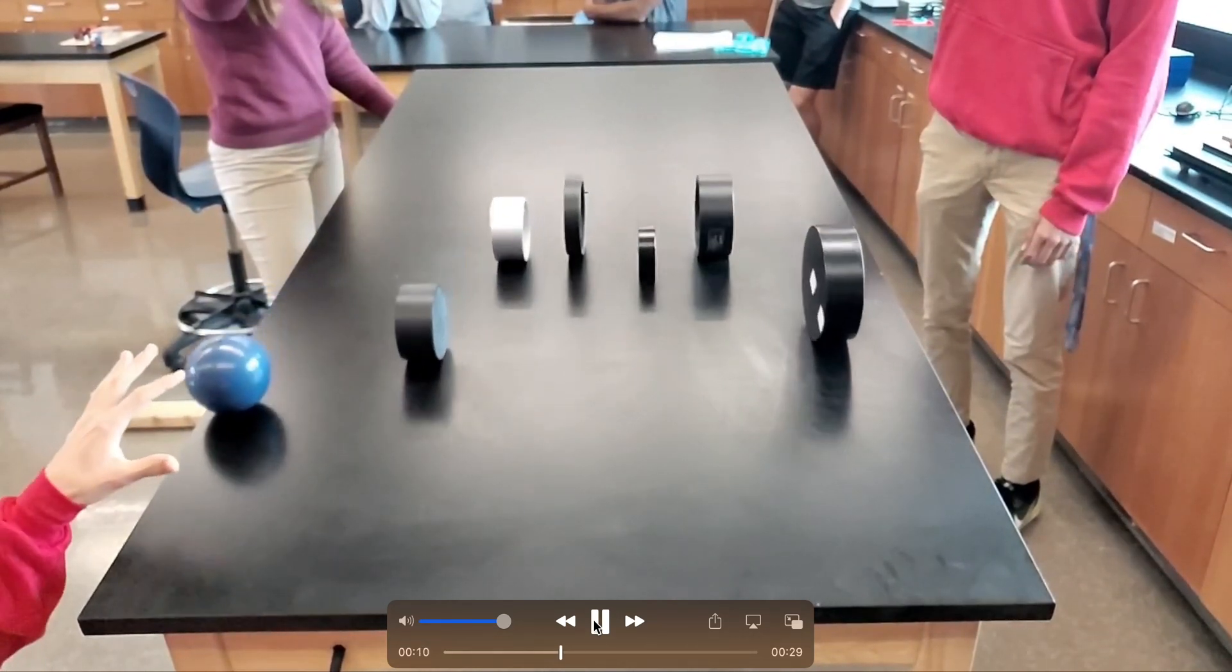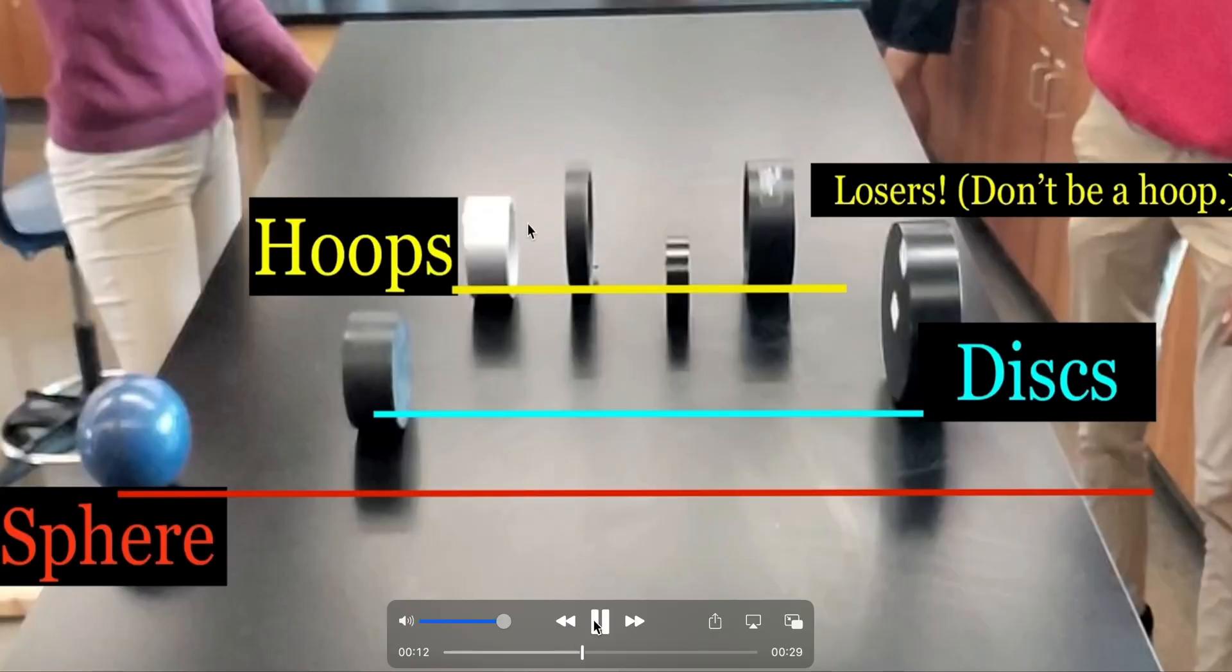There's another trial with, again, the sphere winning, the discs taking second place, and the hoops, well, they're losers. Don't be a hoop.